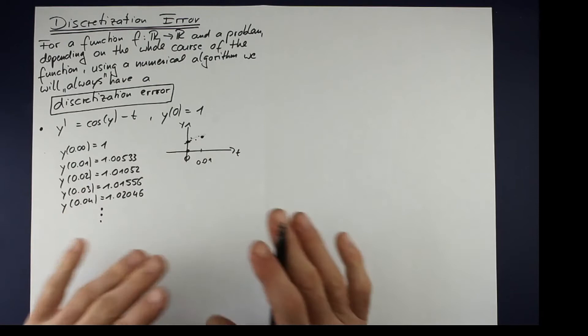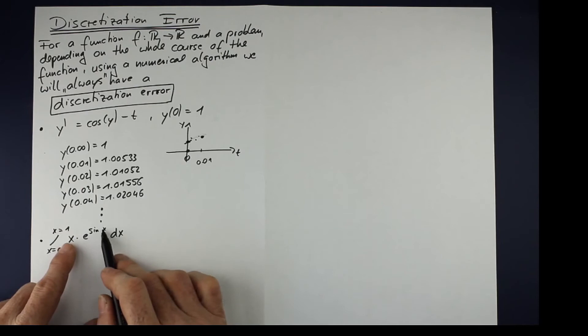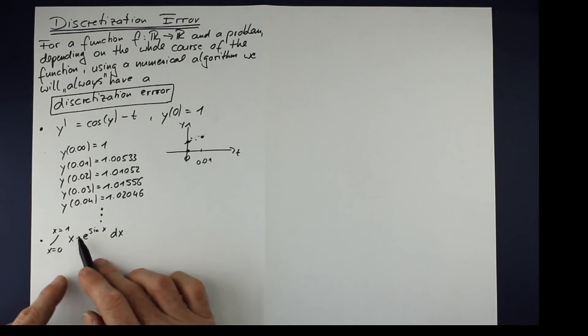Let's talk about the second example. So with this integration problem, we integrate x times e to the sine x and we have a definite integral from 0 to 1. What is the answer? There is no chance of finding an antiderivative here.